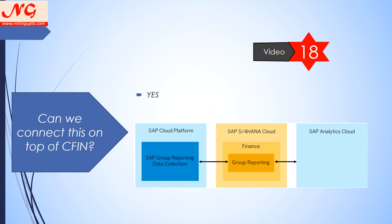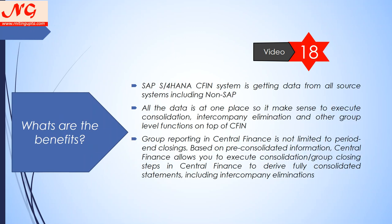The S/4 HANA Central Finance system gets data from all systems including non-SAP, so you don't need to work on different connection interfaces. All data is in one place, which improves performance and real-time data availability. Since it is within S/4 HANA itself, you don't need to worry about timing or performance. You can then execute consolidation — bringing all numbers together, performing intercompany elimination, revaluation, and other group-level functions. Central Finance allows you to execute consolidation steps to derive full consolidated statements including intercompany elimination.